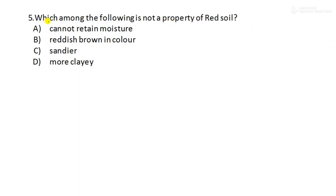Next, moving to question number 5. Which among the following is not a property of red soil? So here they have given 4 properties. Which is not a property of red soil? You have to tick that. Cannot retain moisture? No, this is the property. Reddish brown in color, this is also right. It is sandy, this is also right. More clay? No, this is not more clay. It is a less clay soil. So answer is this one, option number D. You should remember the properties of other soils also.